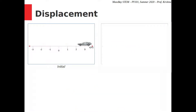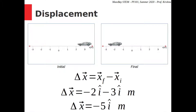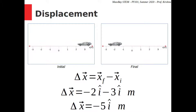What if we took a photo at 3 î meters and later at negative 2 î meters? We calculate displacement as final minus initial: negative 2 î meters minus 3 î meters equals negative 5 î meters. The direction of displacement is given by its sign — a positive displacement means the object moved in the positive direction (rightwards), while a negative sign means it moved in the negative direction (leftwards).